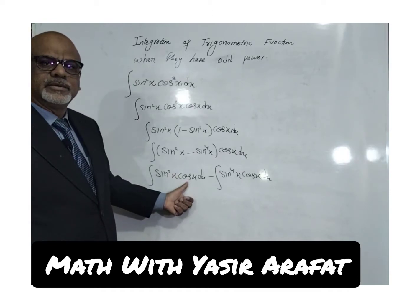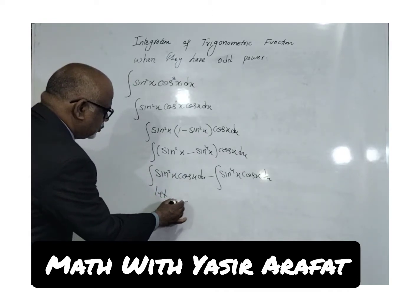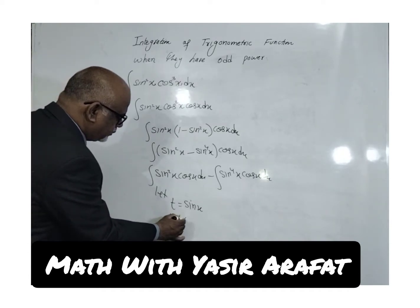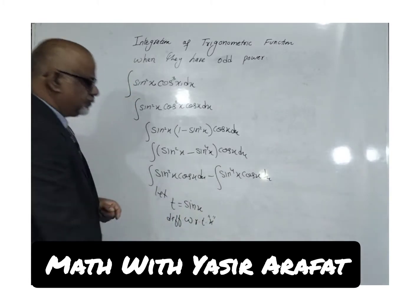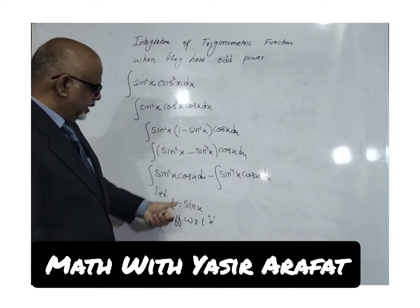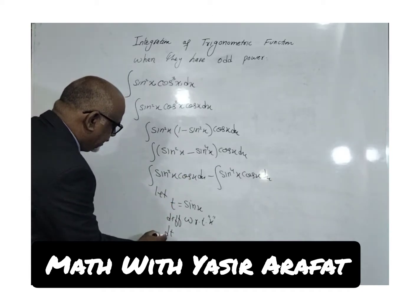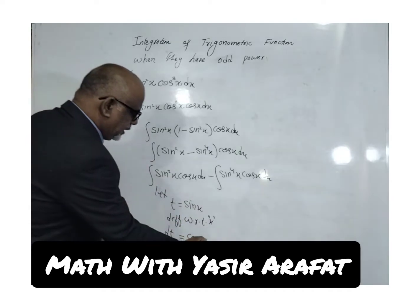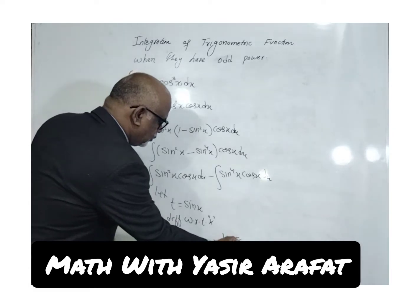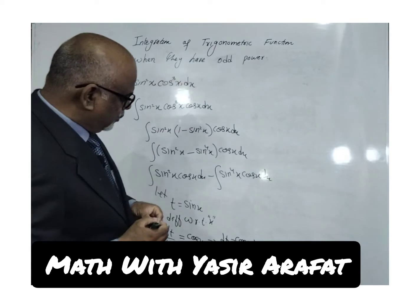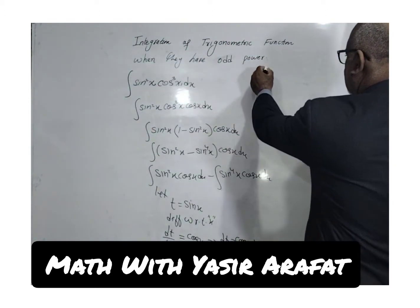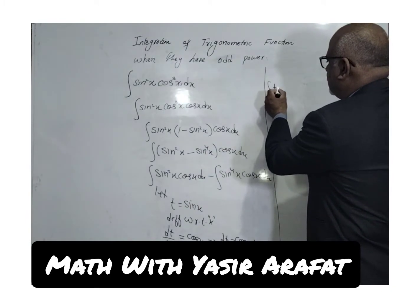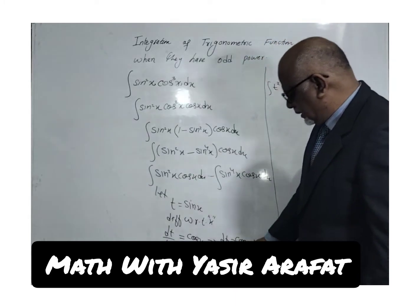This function and cos x are related as a function and its derivative, so we use substitution. Let t = sin x. Differentiating with respect to x: dt/dx = cos x, so dt = cos x dx. We now substitute into the integral.